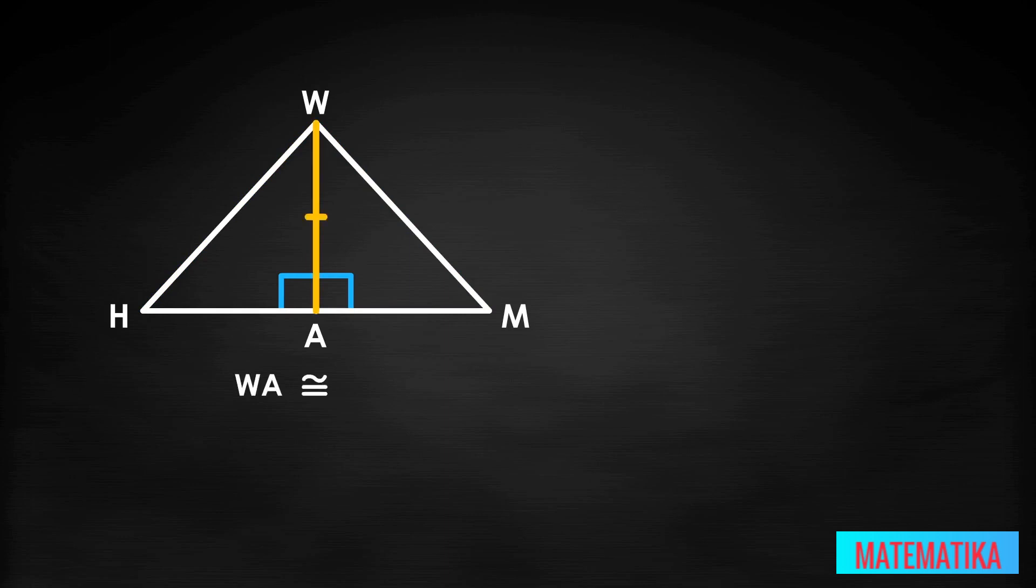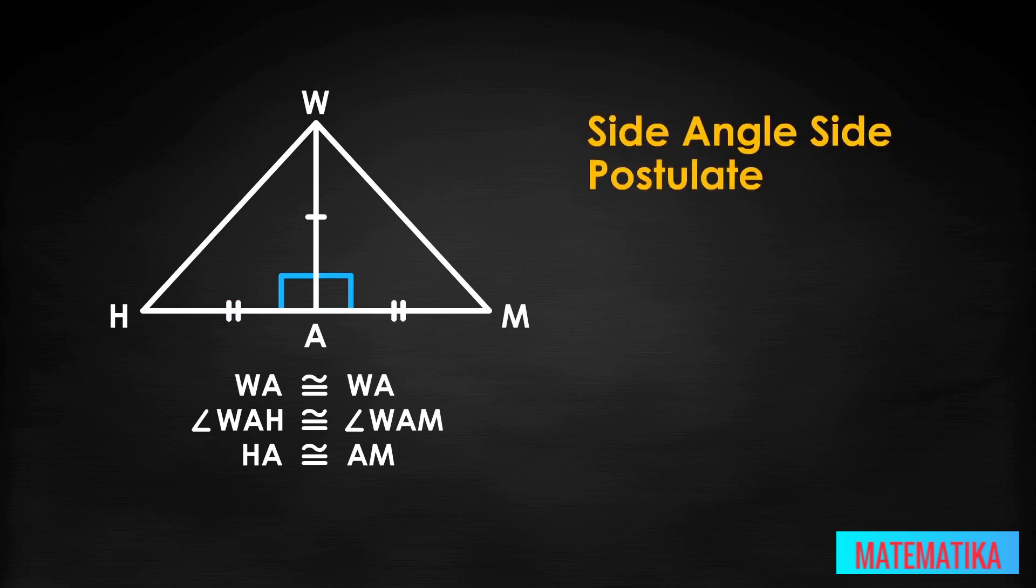WA is congruent to WA because it is the same line segment used in both triangles. Angle WAH is congruent to angle WAM, these are given 90 degree angles. HA is congruent to AM because WA is given as a bisector.